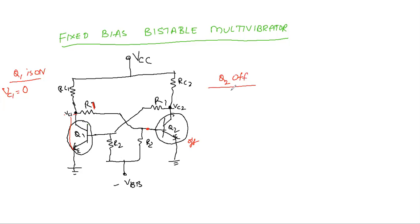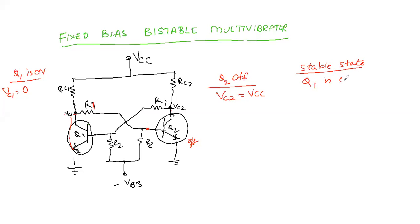Now Q2 is OFF. Whenever the transistor is OFF, the collector and emitter terminals will be open, and the collector voltage becomes VCC. Whenever you design a circuit like this and apply the power supply voltage, one transistor is ON and the other is OFF. This condition is called a stable state of the multivibrator — that is, Q1 is ON and Q2 is OFF — one of the stable states. Q1 will remain ON and Q2 will remain OFF. If we want to change the state of these transistors, we have to apply a trigger pulse at the base or through the collector.